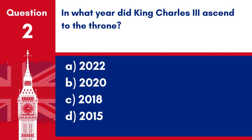Question 2. In what year did King Charles III ascend to the throne? A. 2022. B. 2020. C. 2018. D. 2015. Answer: A. 2022. King Charles III ascended to the throne in the year 2022.